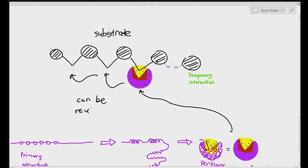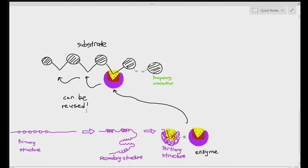That is the definition of a catalyst — enzymes make reactions easier by reducing activation energy, they are not used up, and they can be reused over and over again. That's basically it.